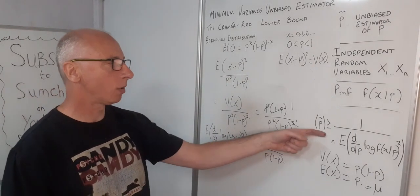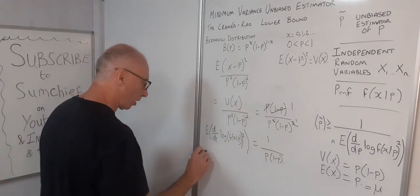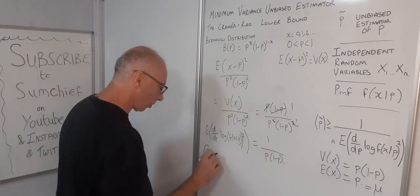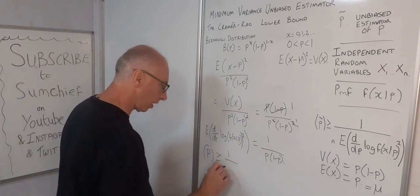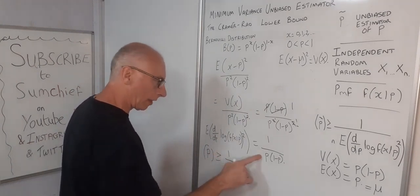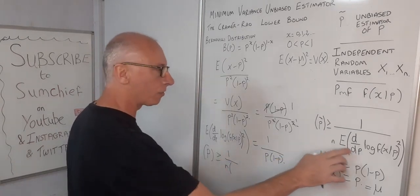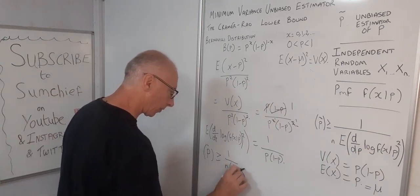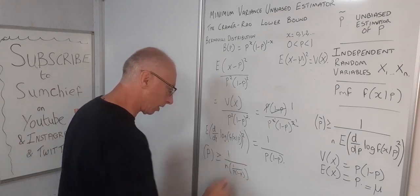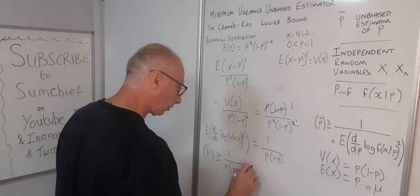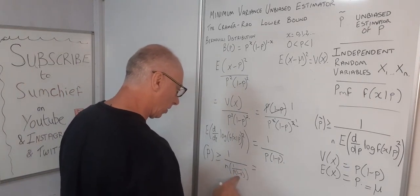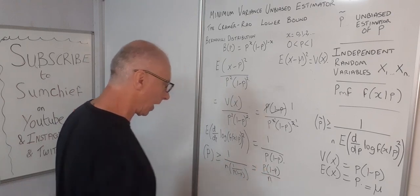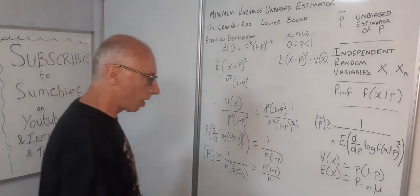For the Cramér-Rao lower bound, our estimator tilde P is greater than or equal to 1 over N times the Fisher information. Since our Fisher information is 1 over P times 1 minus P, and we take its reciprocal, the lower bound becomes P times 1 minus P divided by N. That is our Cramér-Rao lower bound.